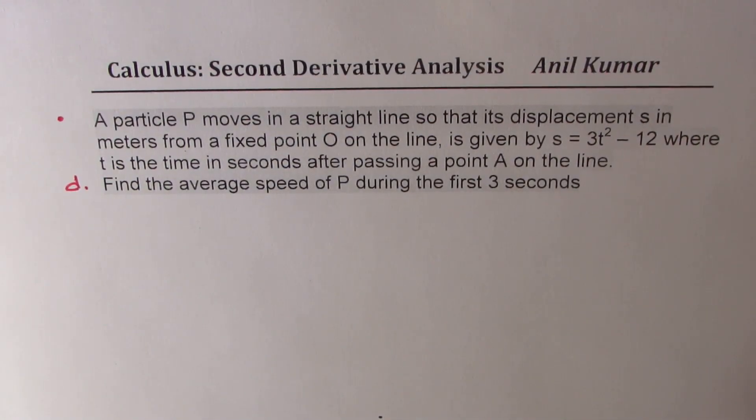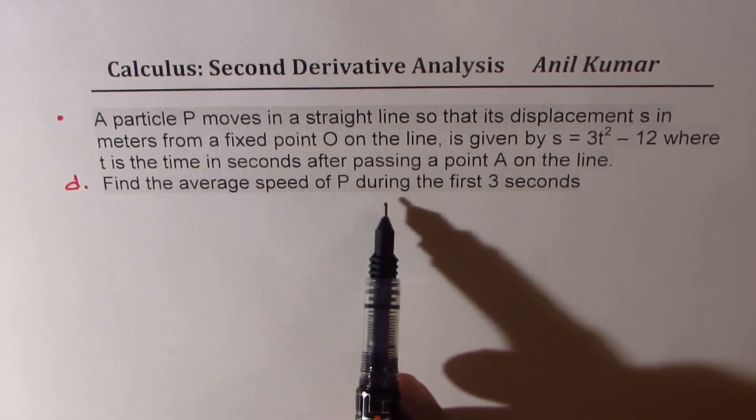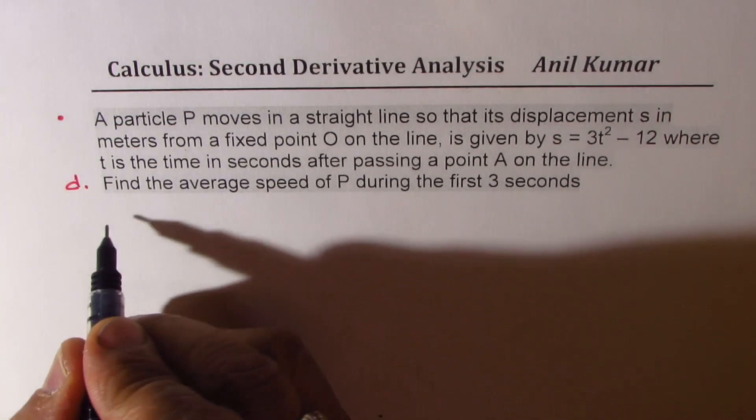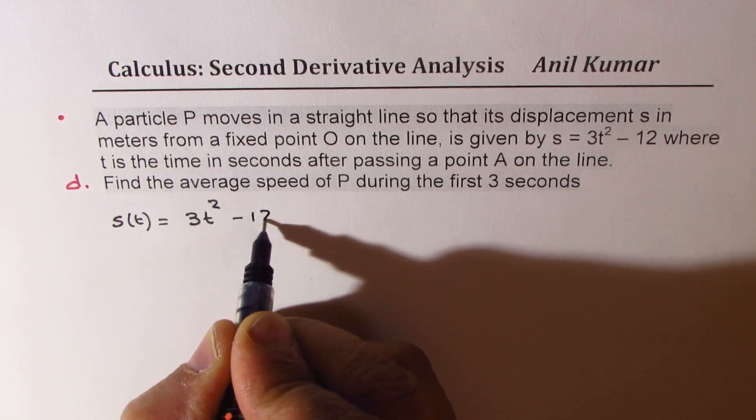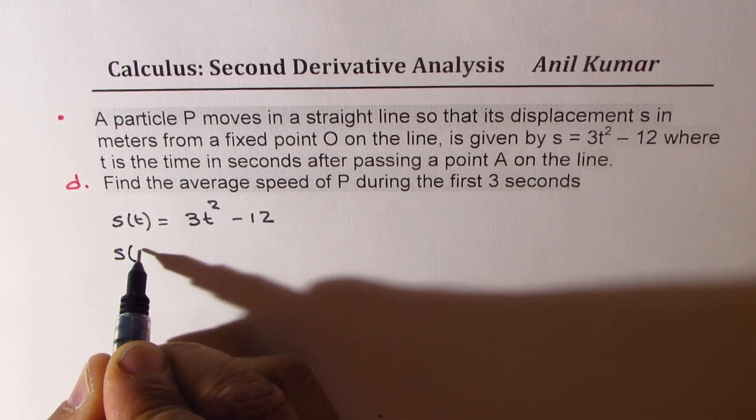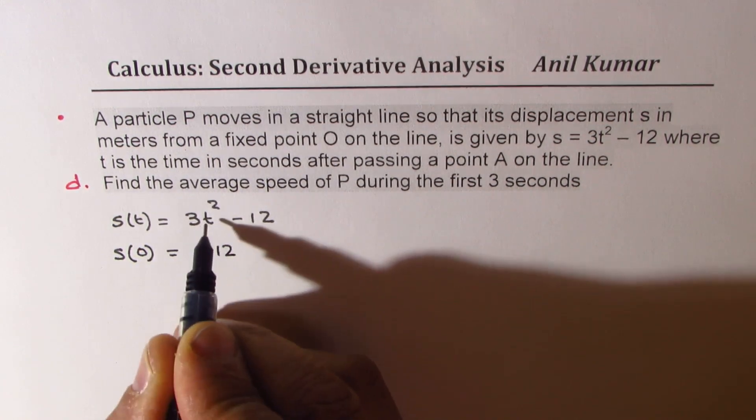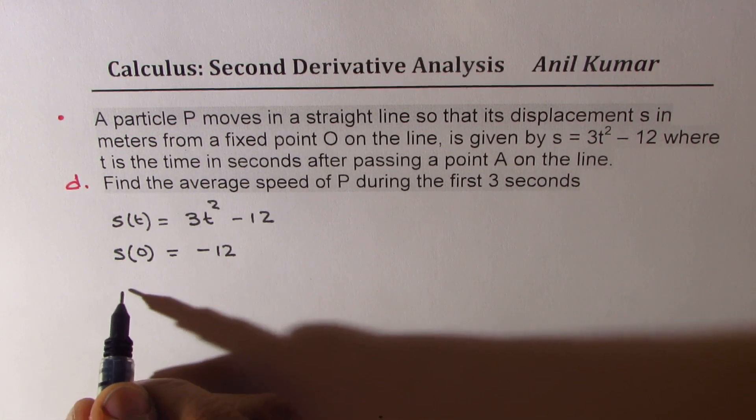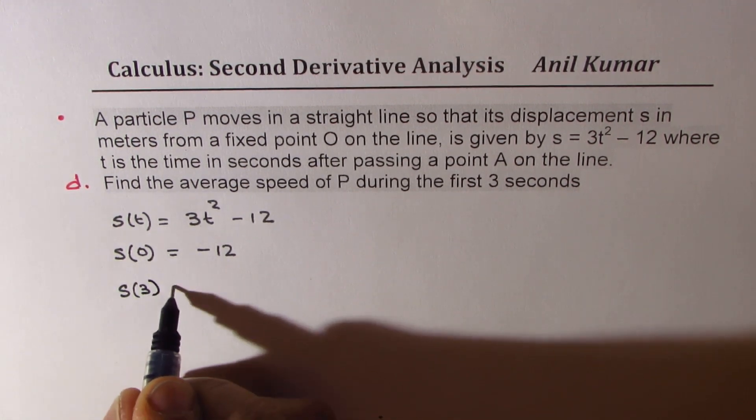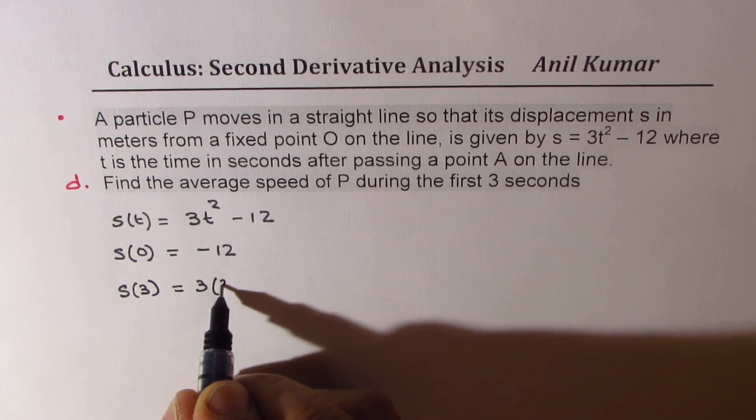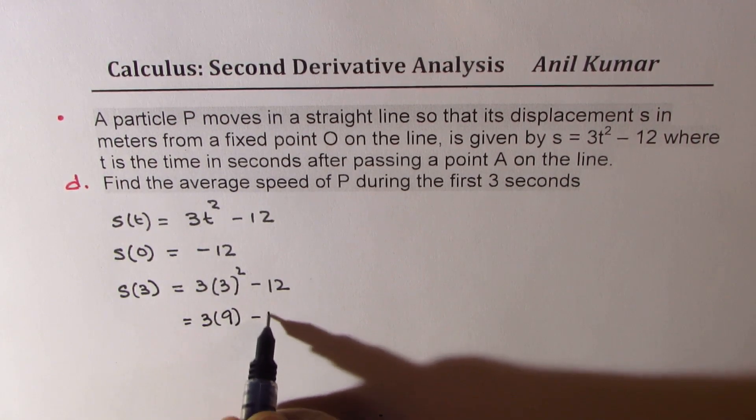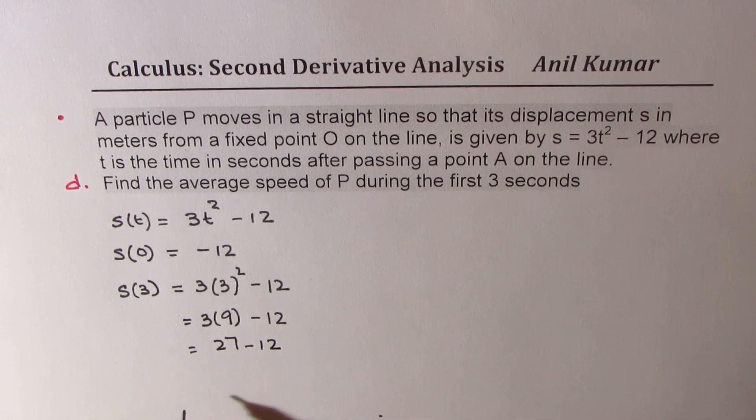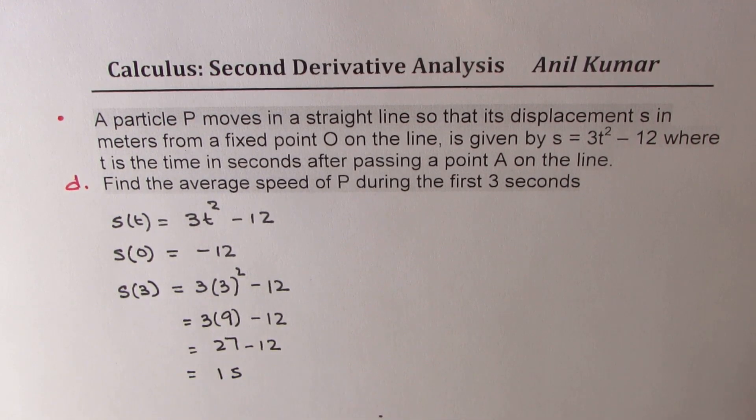Now let me continue on a fresh page to find the average speed of P during the first three seconds. So what we are really given here is the displacement function S(T) equals 3T squared minus 12. And we know when T is equal to 0, at that time, the displacement is minus 12. We need to find what is the displacement when T equals 3. So if I substitute 3 here, I get 3 times 3 squared minus 12. That gives us 3 times 9 minus 12 or 27 minus 12. So 27 minus 12 is 15. So displacement is 15.